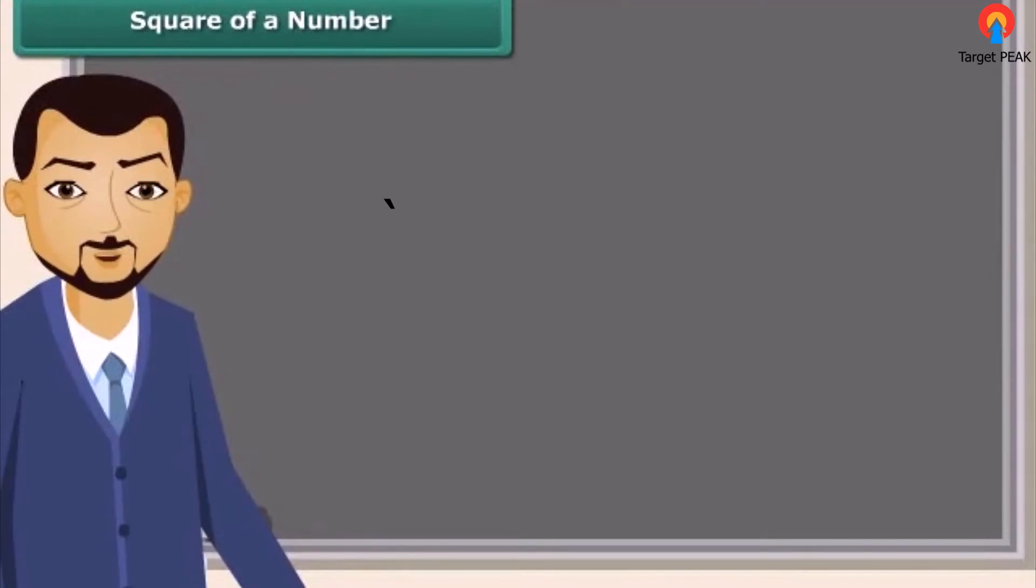Let us first learn about squares. How can we square a number? It is easy. Just multiply the number with itself. You can also write square in the superscript. This tells 4 is multiplied twice which is equal to 16.